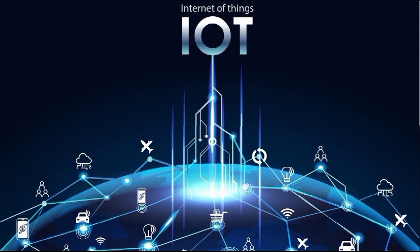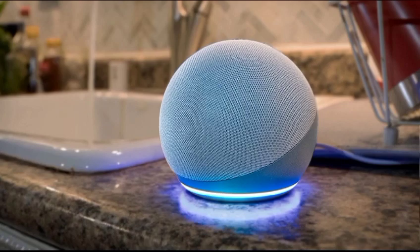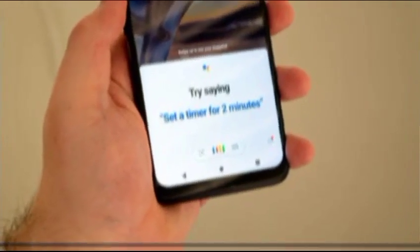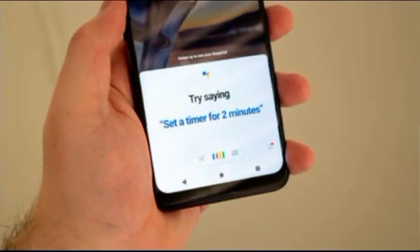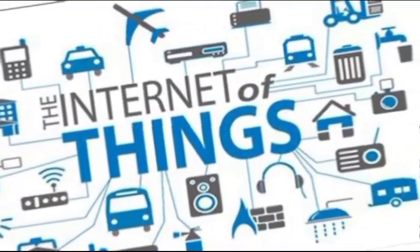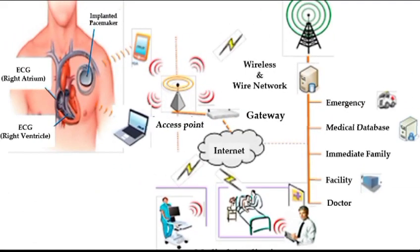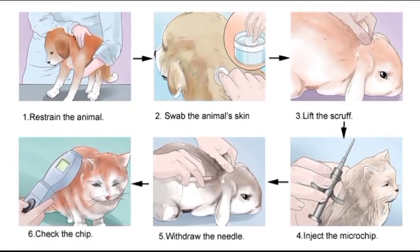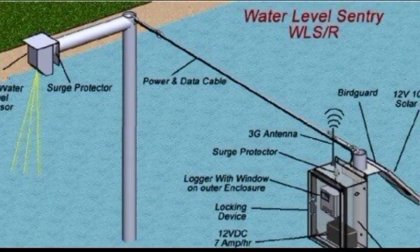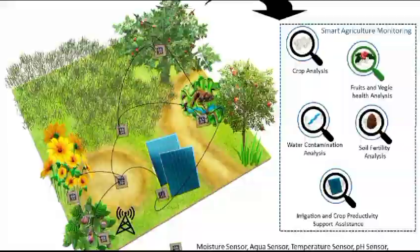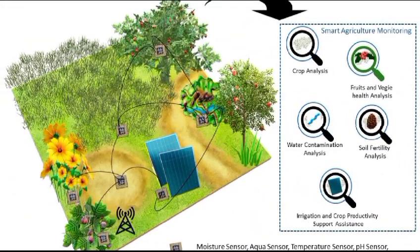Voice assistants like Siri, Alexa, and Google Assistant are powered by IoT, making it easy to control your devices with just your voice. Things in IoT sensors can refer to a wide variety of devices such as heart monitoring implants, biochip transponders on farm animals, electric clamps in coastal waters, and automobiles with built-in sensors.